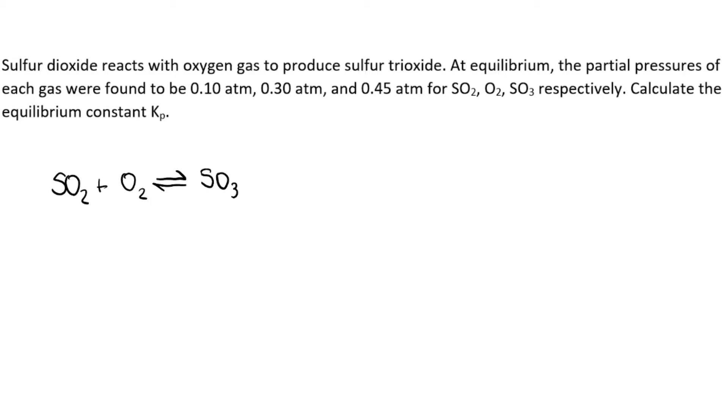To balance this equation, all you have to do is write a 2 for the coefficient of sulfur dioxide and a 2 for the coefficient of sulfur trioxide. Now on the left side of the equation you have 6 oxygen, and on the right side you have 6 oxygen, so it's balanced. We wouldn't be able to go any further without doing that first initial step.